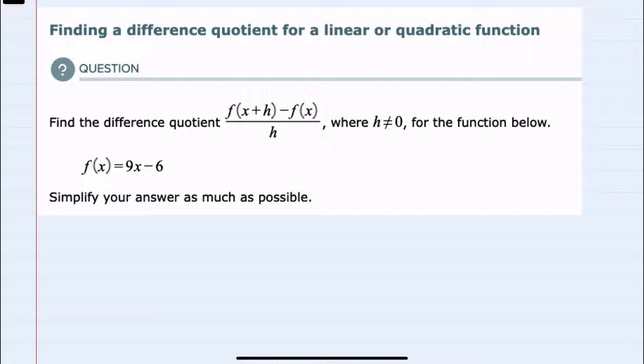So knowing the formula for the difference quotient, we can start with f of x plus h, meaning we will replace x in our function with x plus h. So that part of the formula will be 9 instead of times x, it'll be times x plus h minus 6. And then we're told to subtract f of x, and f of x is just the function as we're given it.